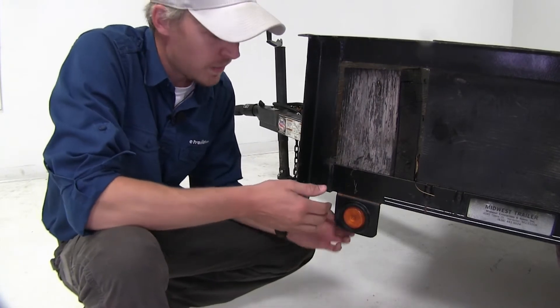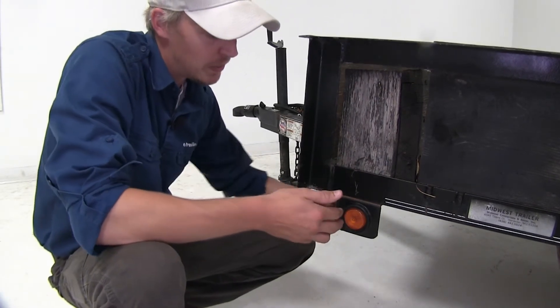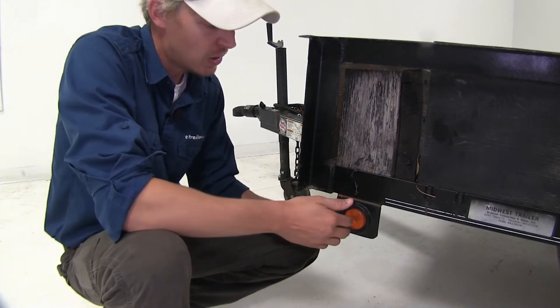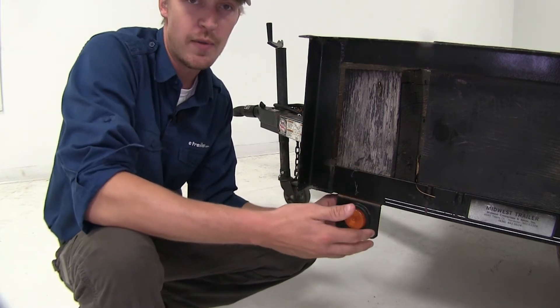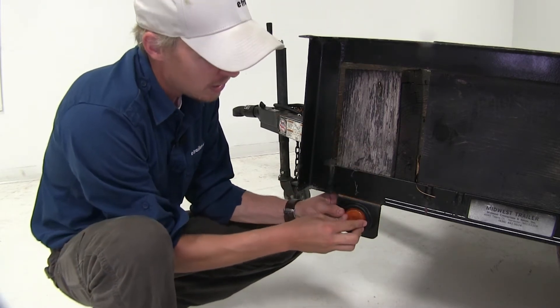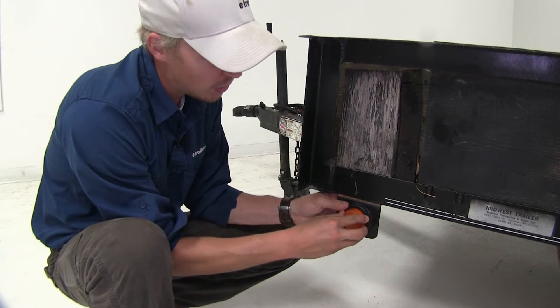To remove our old light, if we can access the back, we can simply push it out through the front, or if we have a flat blade screwdriver, we can pry it out. So if we have access to the back, let's just push it out.